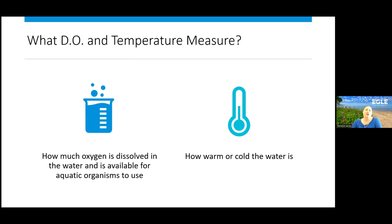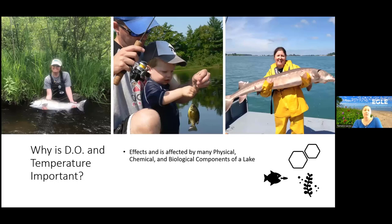What does DO and temperature measure? Temperature measures how warm or cold the water is, and dissolved oxygen measures how much oxygen is dissolved in the water and therefore is available for aquatic organisms to use. DO and temperature affect and are affected by many different physical, chemical, and biological components of a lake, and it impacts what type of organisms can live in your lake. The next few slides and videos will explain more, and then we'll return back to this question.